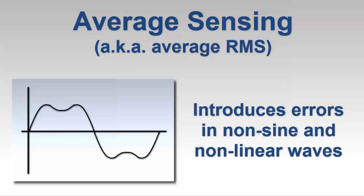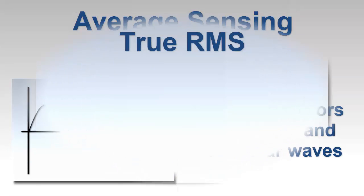Unfortunately, for other AC waveforms, such as square waves, this calculation can introduce significant inaccuracies. The equation can also be problematic when an AC waveform is nonlinear, as would be found in systems where the original or fundamental waveform is distorted by one or more harmonic waveforms. In these cases, we need to apply a method known as True RMS.